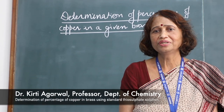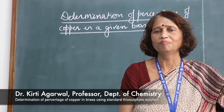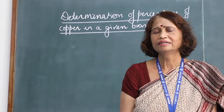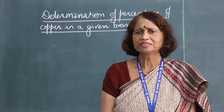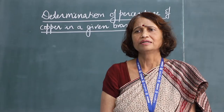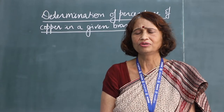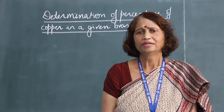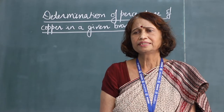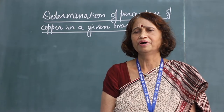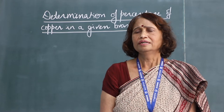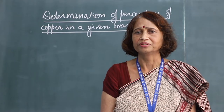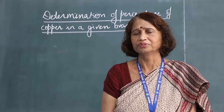Today's experiment is determination of percentage of copper in a given brass sample. Brass is an alloy of copper and zinc and it is used for various purposes: making locks, hinges, bearings, automobile gears, decorative items, ammunition casings and so on. Its properties can be varied by varying the composition. The usual composition of brass is copper around 60 to 80 percent and zinc 20 to 40 percent.